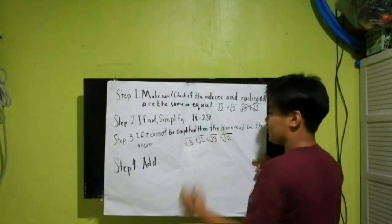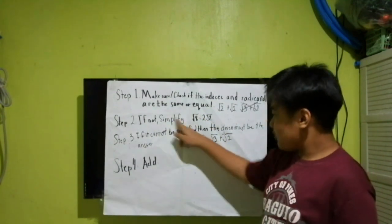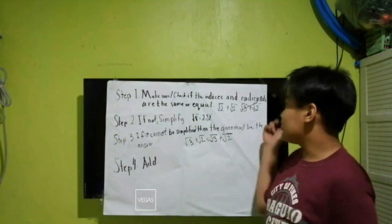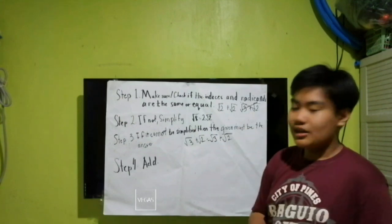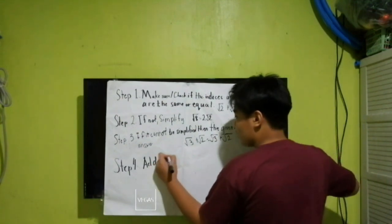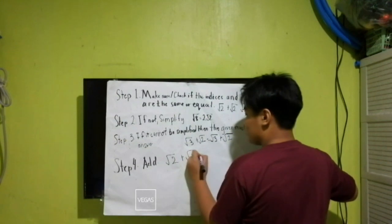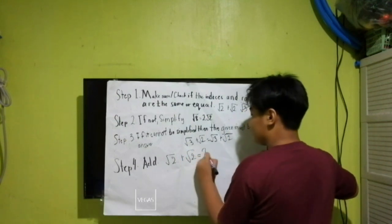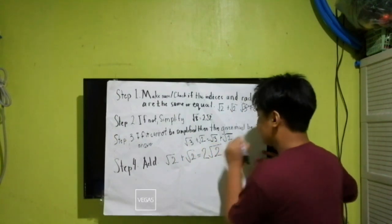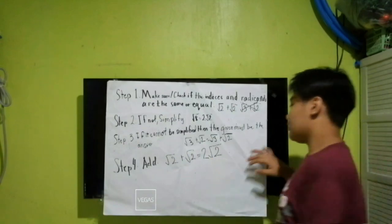And if the radicands and the indices are all the same, we can add them now. So root 2 plus root 2 is equal to 2 root 2. That is your final answer.